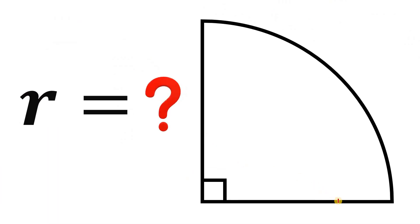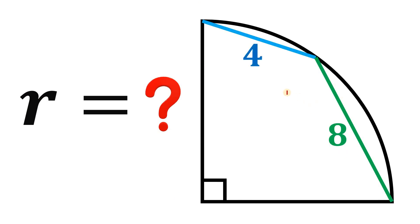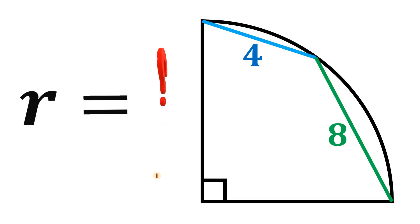Let's start with a quarter circle. Now let's draw a chord that measures eight units and another chord that measures four units. The question is: what is the length of the radius of this quarter circle? Pause the video and see if you can answer this question, and if you're done, post your answer in the comment section below.